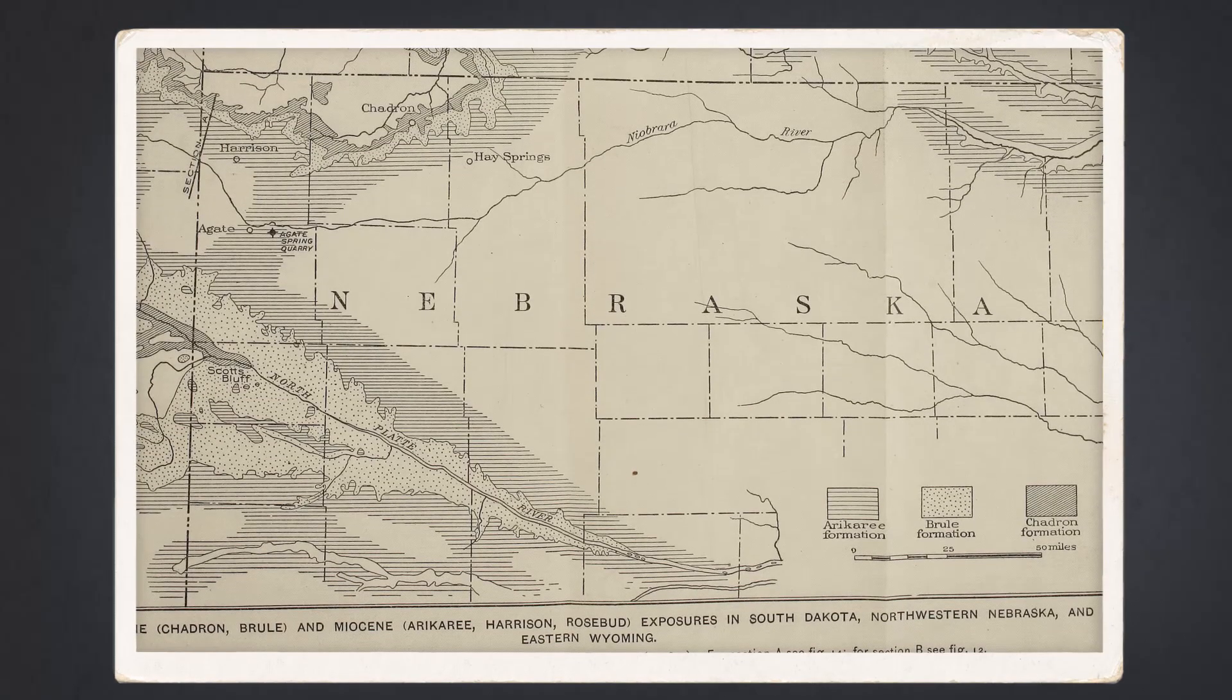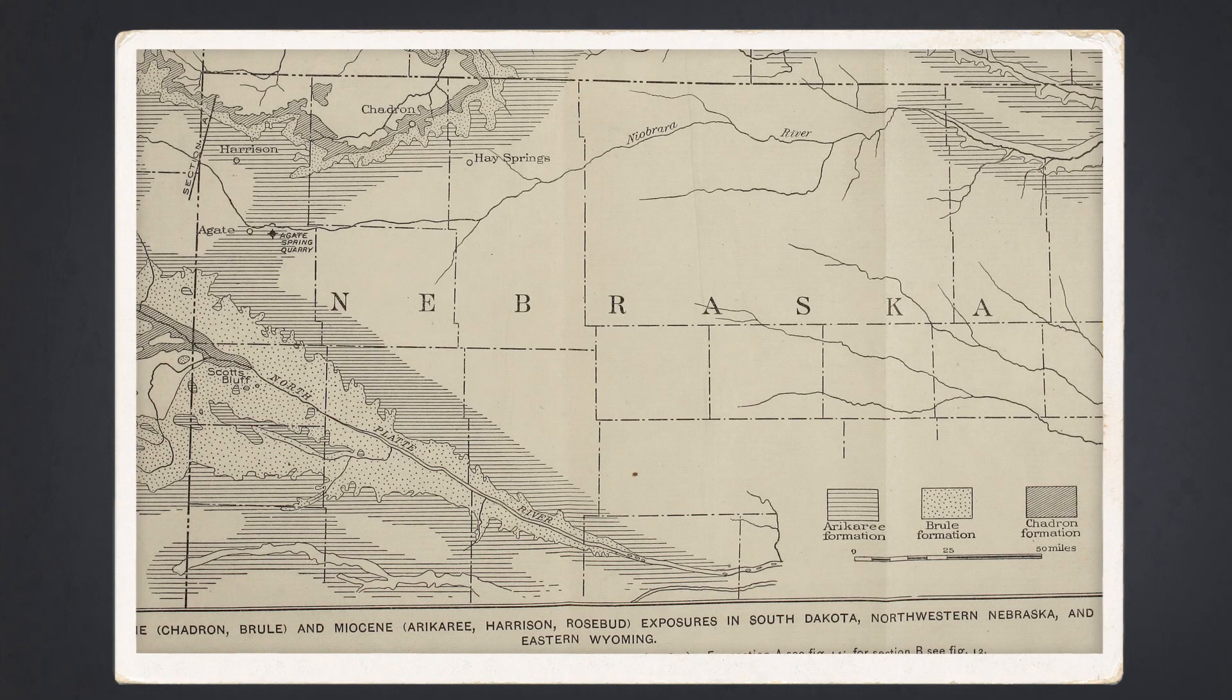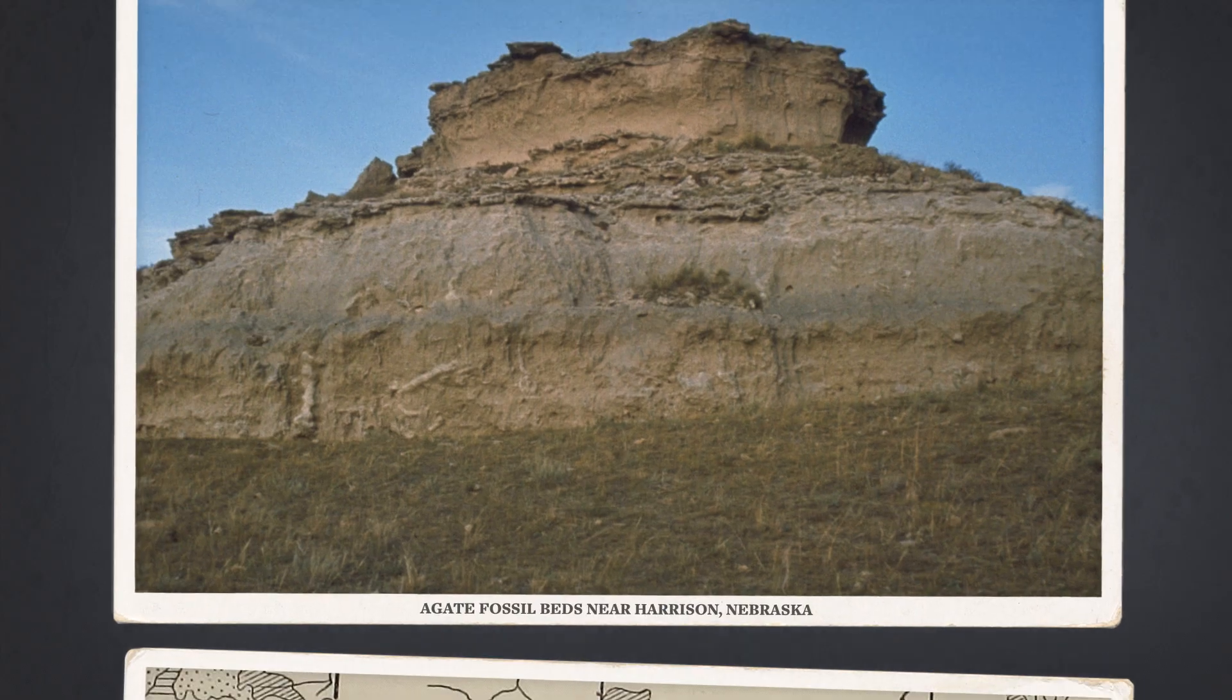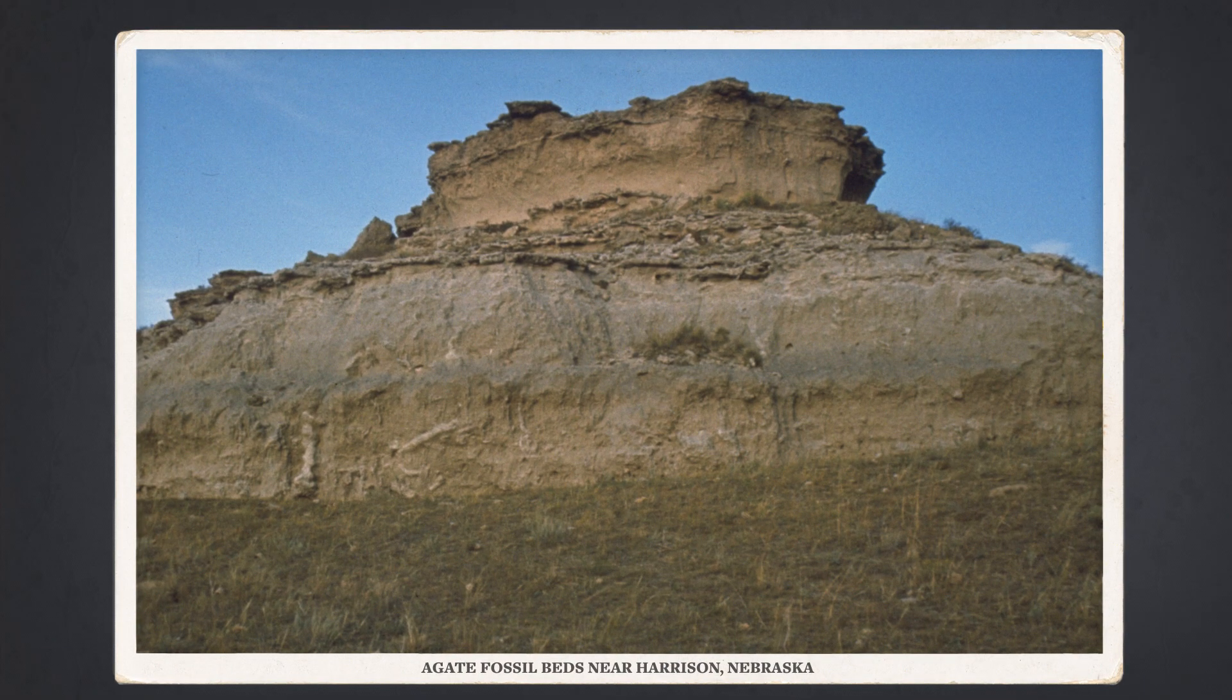Imagine you're a paleontologist in the late 1800s, working among the sandy rocks of Nebraska. You're searching for fossils in the Harrison Formation, a big swath of siltstone, sandstone, and volcanic ash dating back to the Miocene epoch some 22 million years ago.